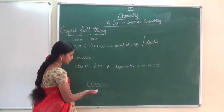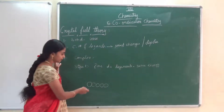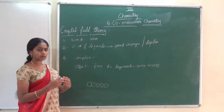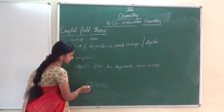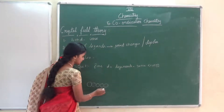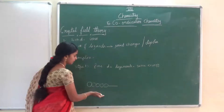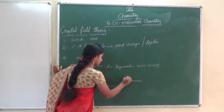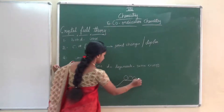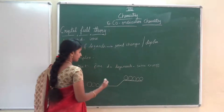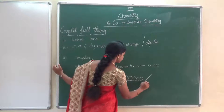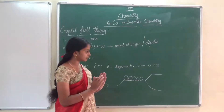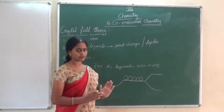When the ligands approach the central metal atom, the ligands bring electrons. The central metal atom also has electrons. So when ligands approach the central metal atom, both will start to repel. Because of the repulsion, the degeneracy will be lost and the energy will be raised. When the ligands approach further, the orbitals are split and the energies differ — the five orbitals no longer have equal energy.